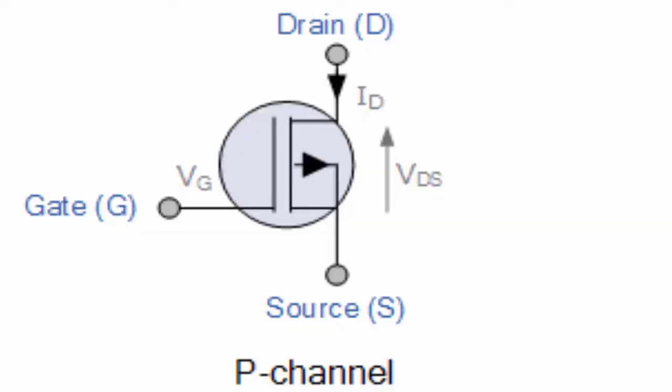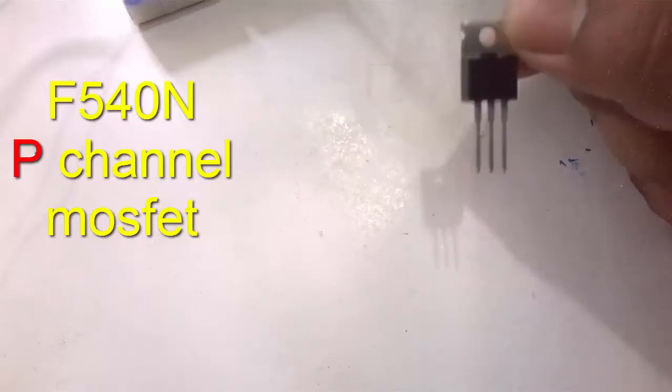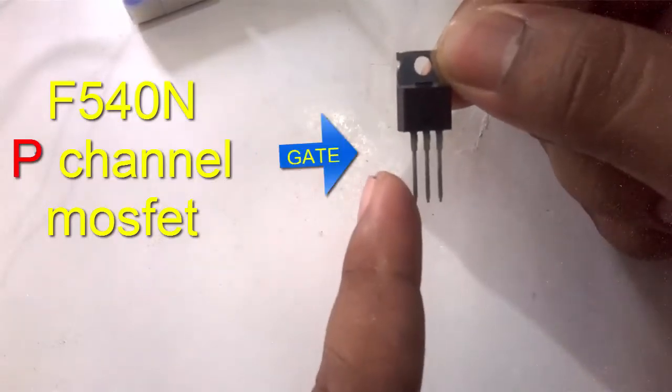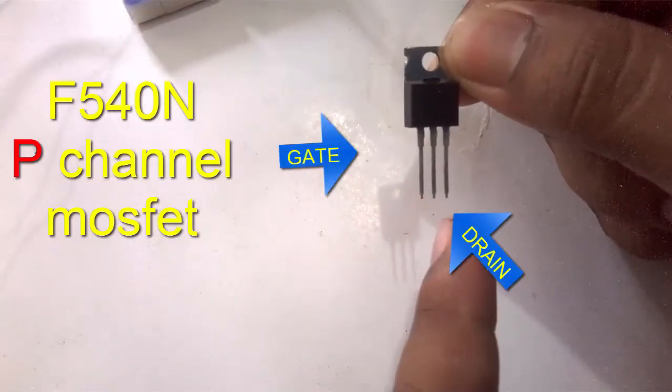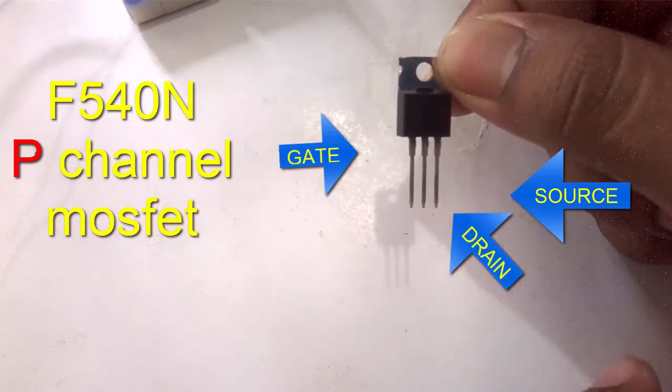P-Channel MOSFET. F540N is a P-Channel MOSFET. First pin is Gate, second pin is Drain, and last pin is Source.